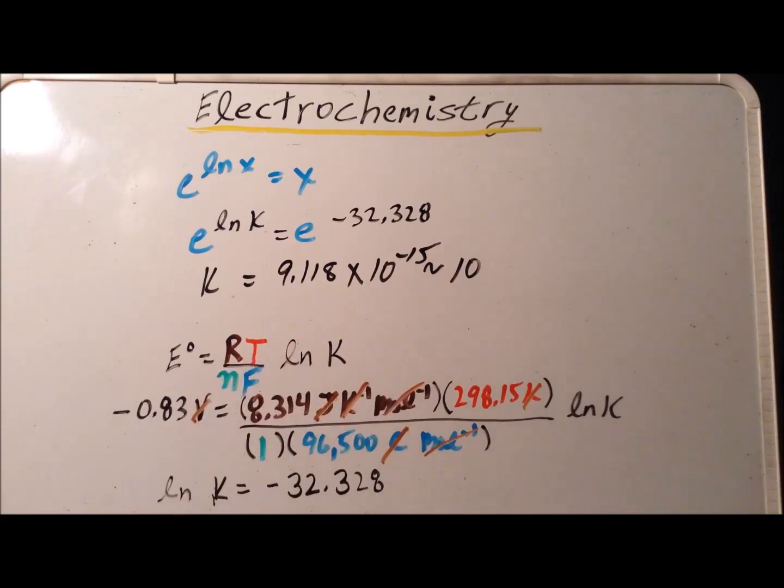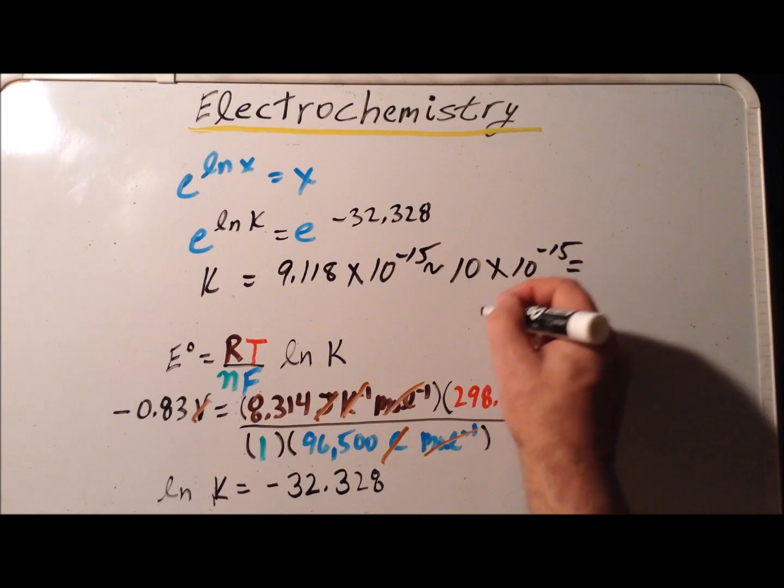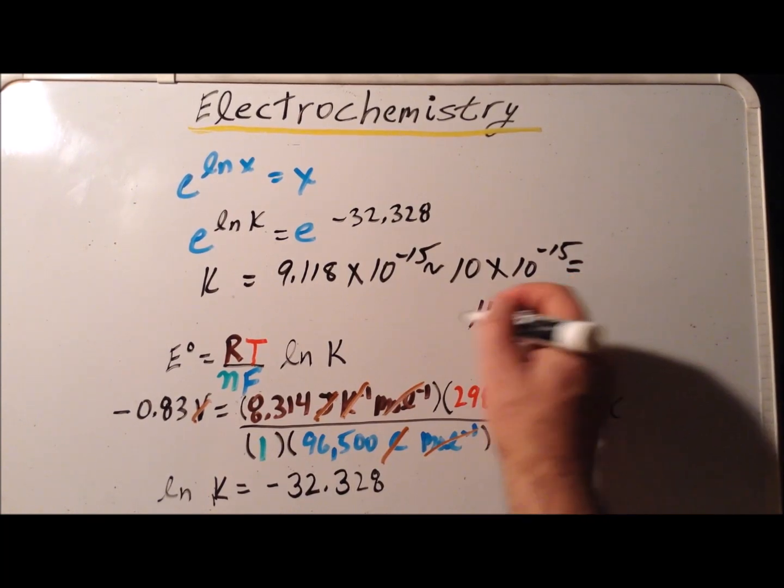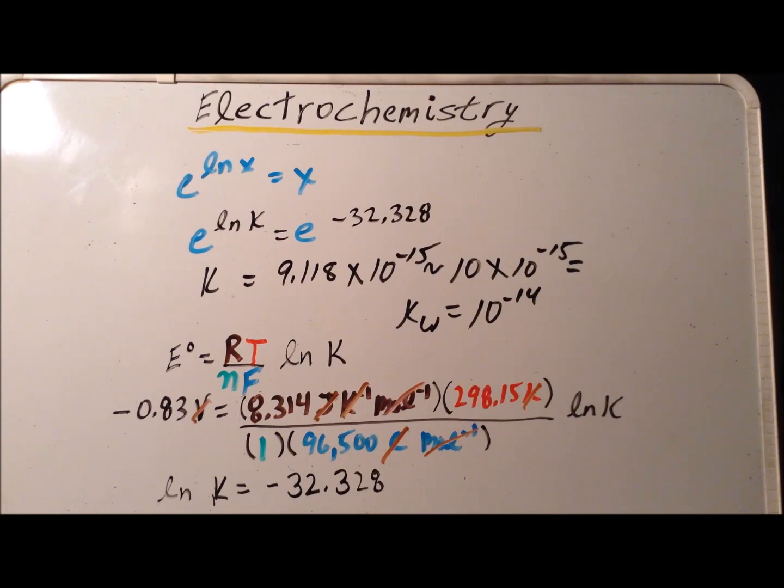So this value is approximately 10 times 10 to the minus 15, which is just 10 to the minus 14. And within experimental error, we have the accepted value for the ion dissociation constant of water Kw at 298.15 kelvin, which is 10 to the minus 14.